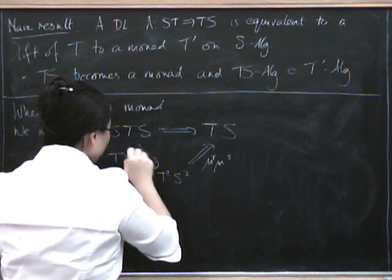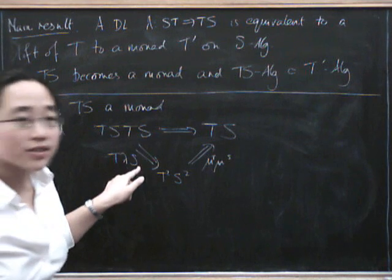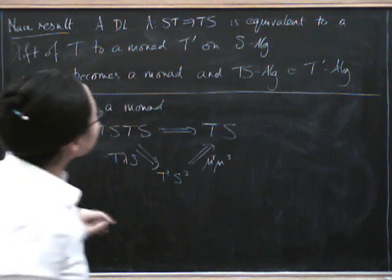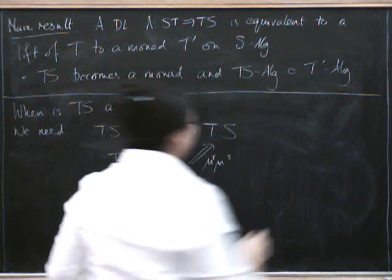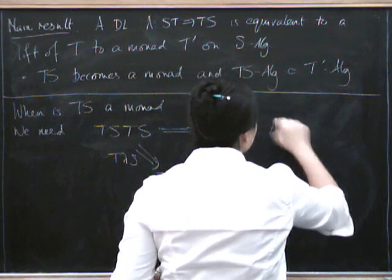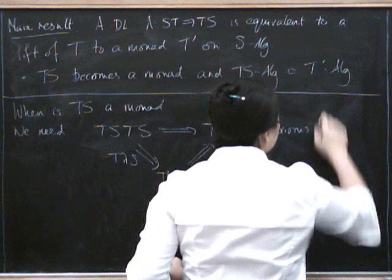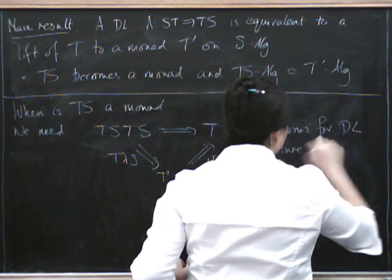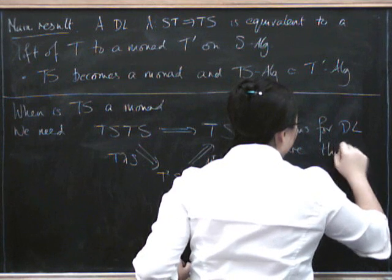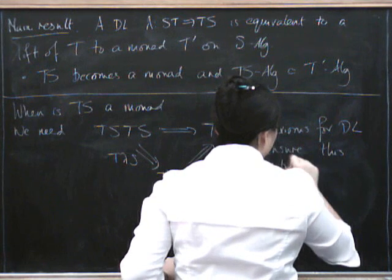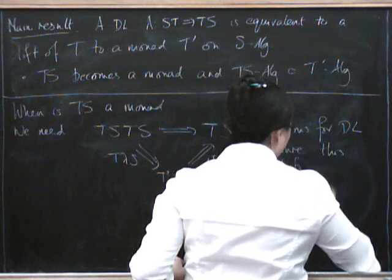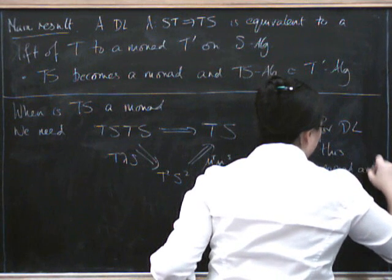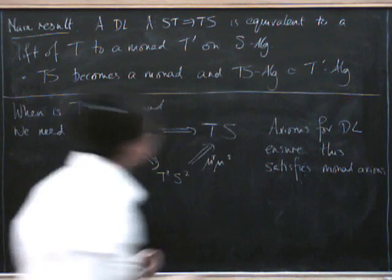So all we need, what we need here is something from S∘T to T∘S. Hurrah! If we have a distributive law, then we've got one of these things. And then the axioms for a distributive law ensure that this is a monad and this satisfies the monad axioms. Right, the axioms, the monad axioms. Okay, so that's all very well.